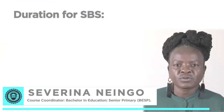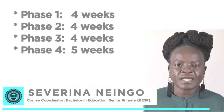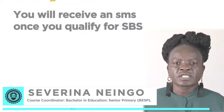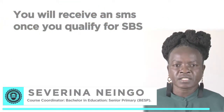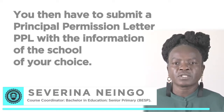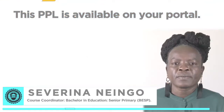Duration for school-based study: Phase one, four weeks. Phase two, four weeks. Phase three, four weeks. Phase four, five weeks. You will receive an SMS once you qualify for SPS. You then have to submit a principal permission letter, PPL, with the information of the school of your choice. This PPL is available on your portal. The SPS assignment and study guide will be made available to you after submission of the PPL.